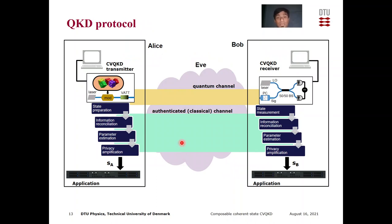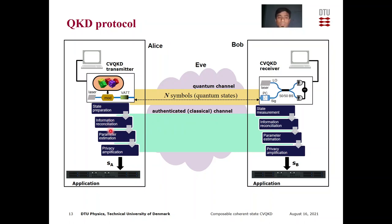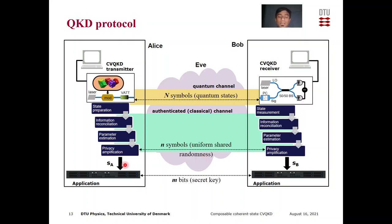Here is a diagram showing the entire protocol in action. State preparation and state measurement are done using n quantum symbols. Then, using the authenticated channel, the classical steps are information reconciliation, parameter estimation, and privacy amplification. In this last step, we have some n symbols providing uniform shared randomness. Finally, at the end of the privacy amplification step, we get keys that are m bits long — these are secret composable keys.